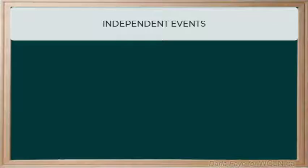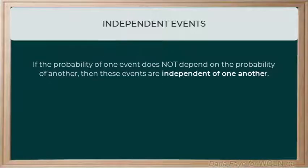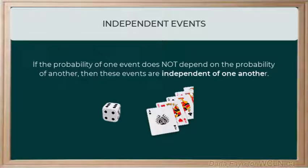Let's begin by determining what it means to be independent. If the probability of a second event does not depend on the first event, we describe these events as being independent events. For example, if I rolled a standard six-sided die and then selected a card from a standard 52-card deck, I would have two events that are completely independent of one another. The probability of rolling a die does not influence the probability of selecting a certain card from a deck. So this would be an example of independent events.